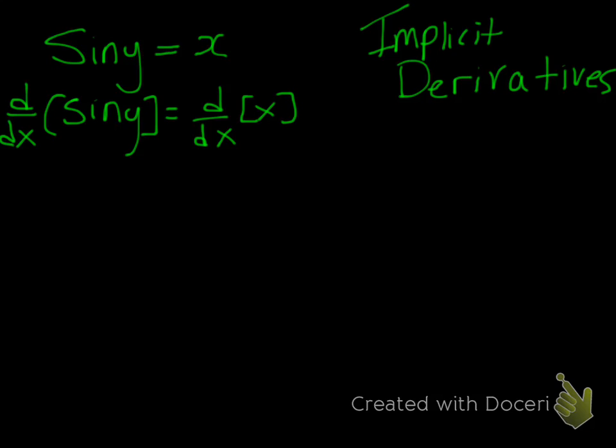So the tricky part of this is taking the derivative of sine of y. We know that the derivative of x is just 1. So what you need to remember, of course, is that the derivative of sine is cos. So the first part we write is cos y.